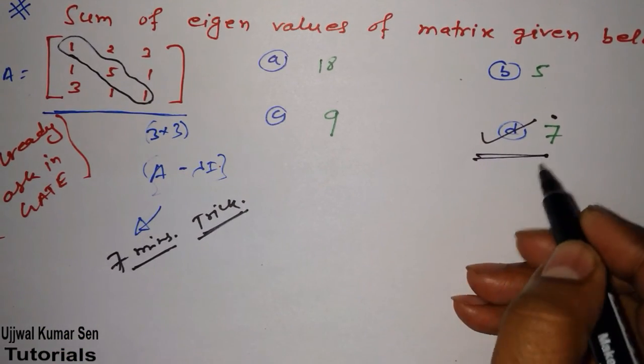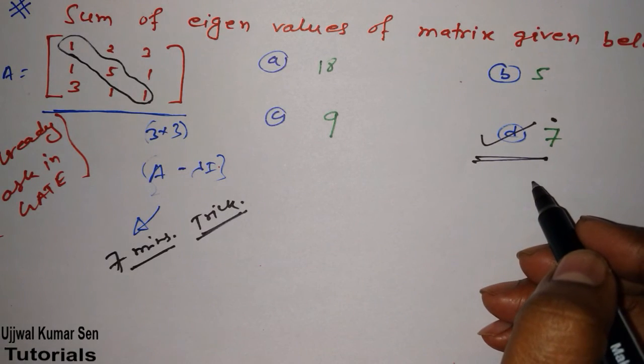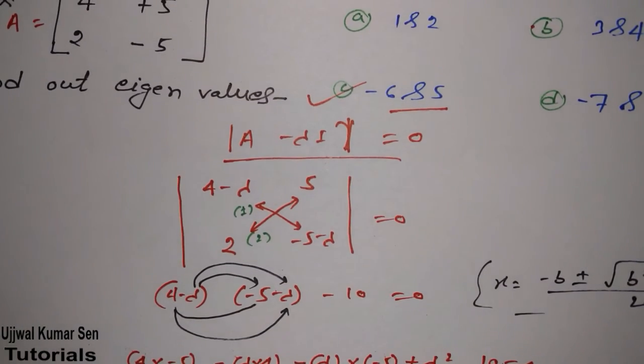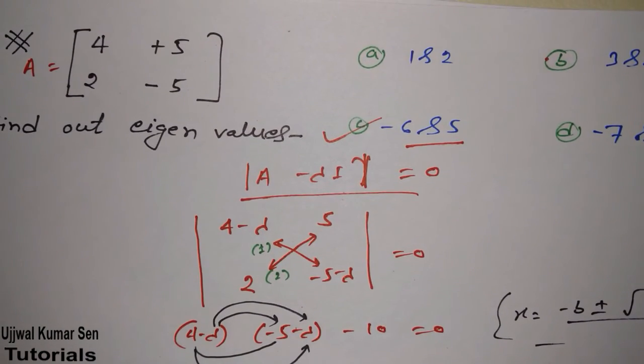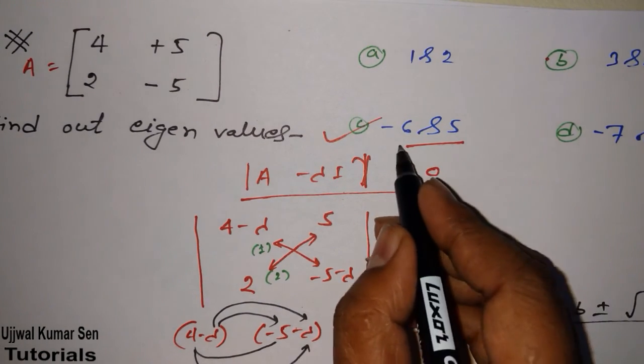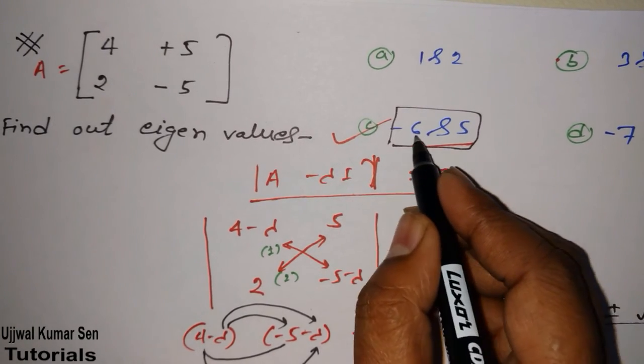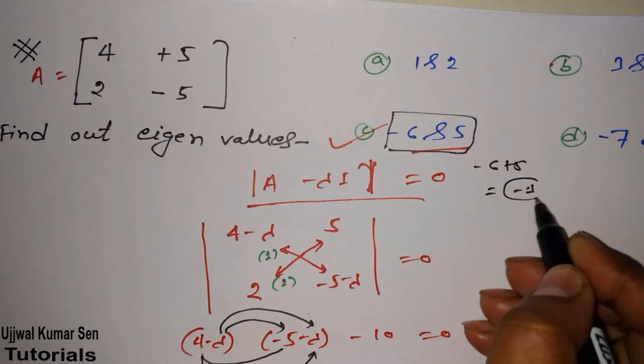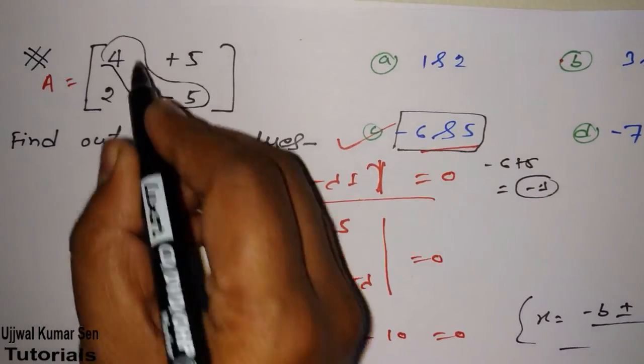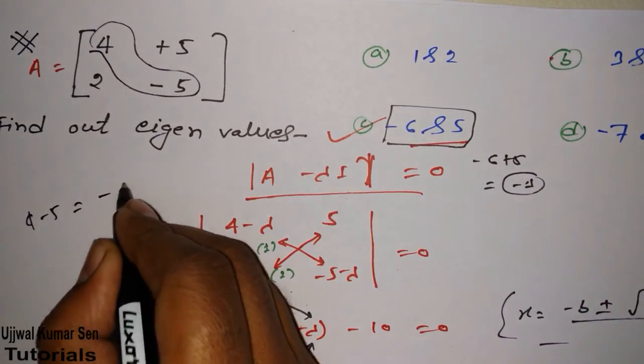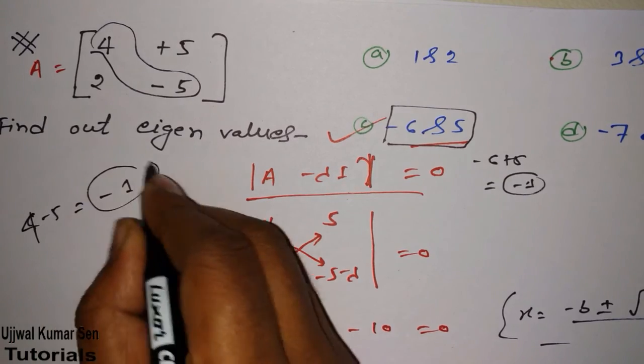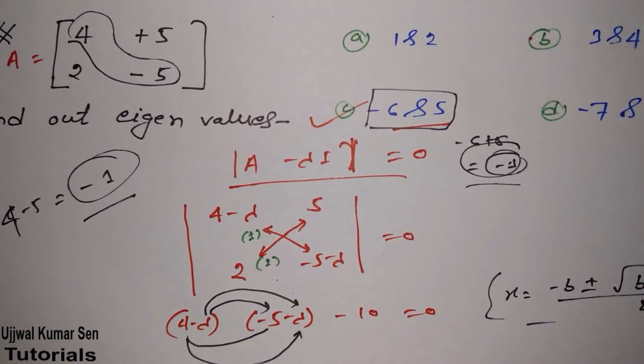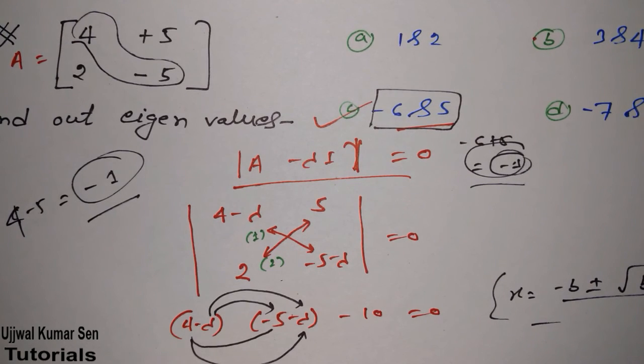I will prove it. Is it the right approach or not? Just go back to the previous question. What we got after solving the question, eigenvalues are minus 6 and 5. Just do addition: minus 6 plus 5 equal to minus 1. Now do addition of these diagonal elements: 4 minus 5 equal to minus 1. Minus 1, minus 1, both are same. That means the trick I have shared with you is absolutely right.